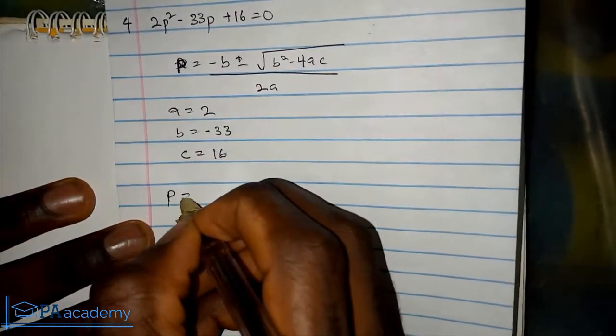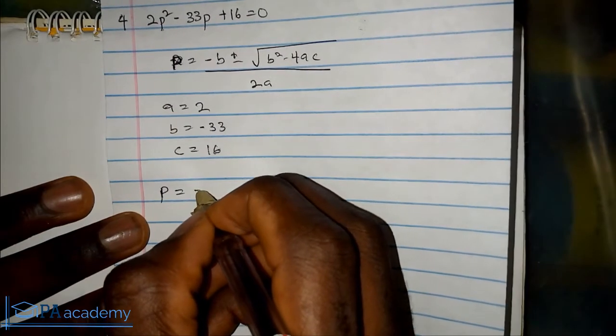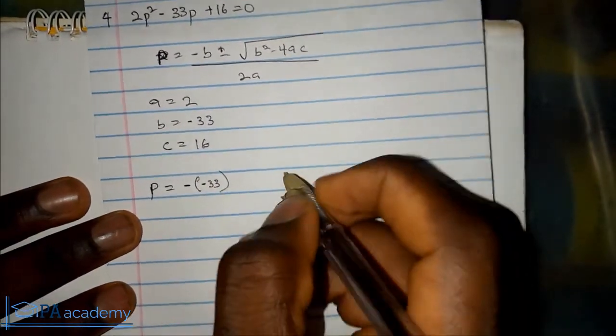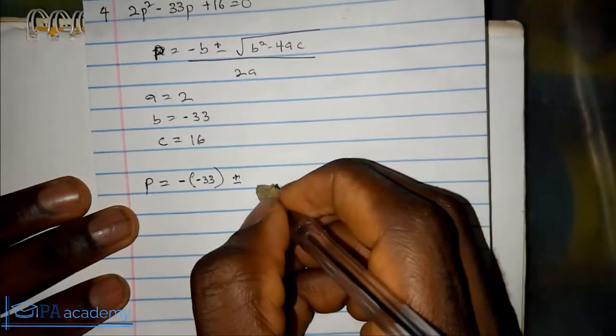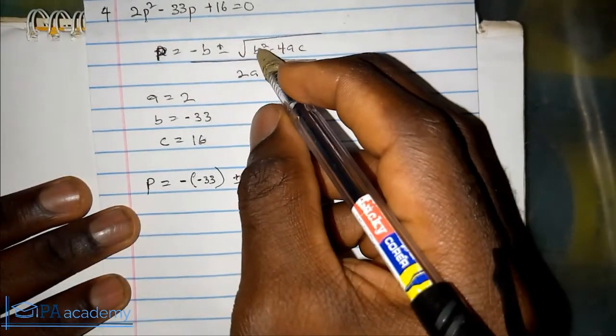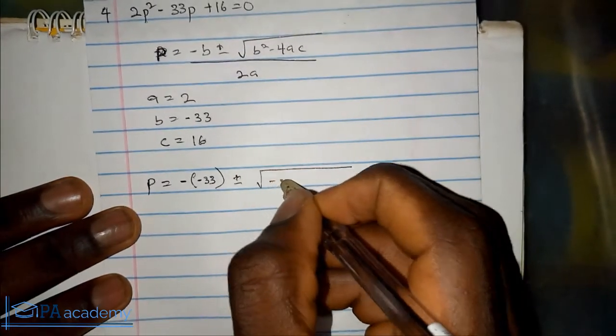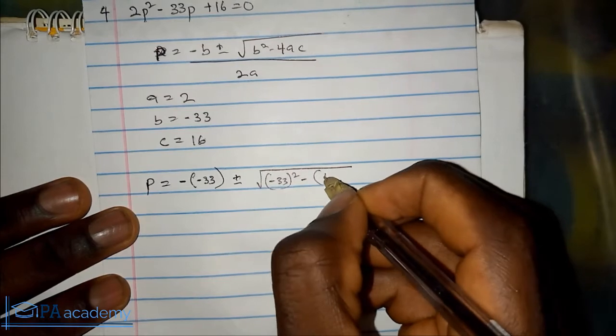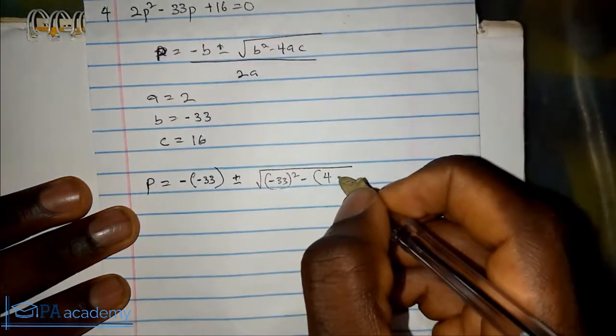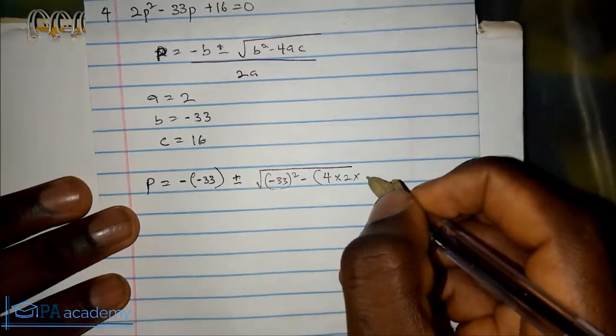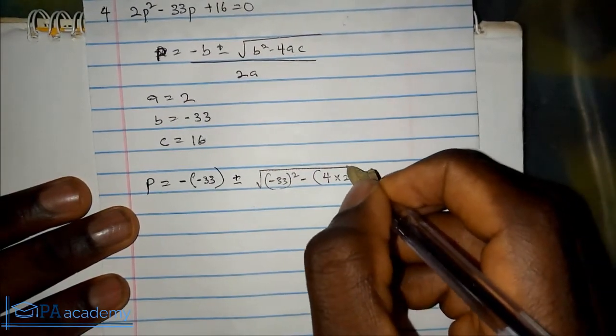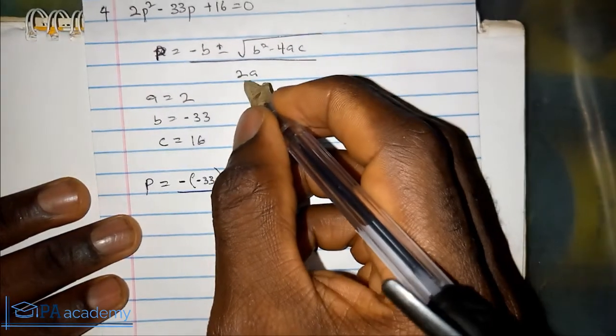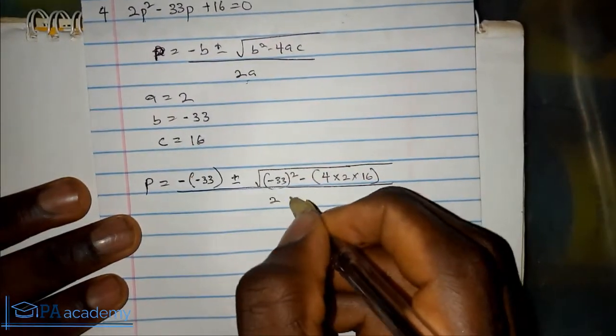What we are going to be having is p equals minus, so the value of b is minus 33, plus or minus square root of, the value of b squared, that is minus 33 squared, minus 4, the value of a is 2, 4 times 2, times the value of c is 16, over 2a, so that is 2 times 2.